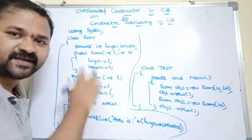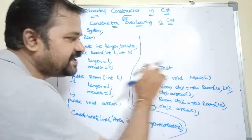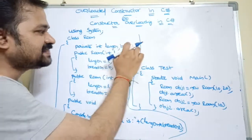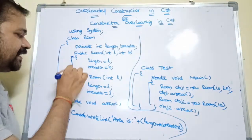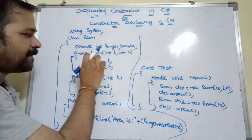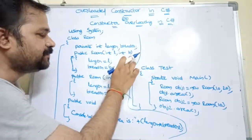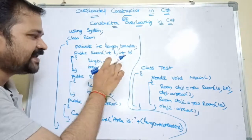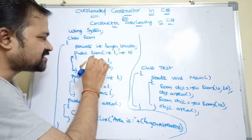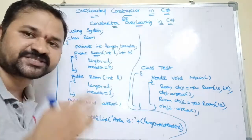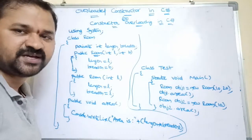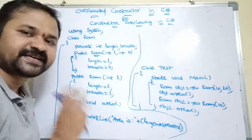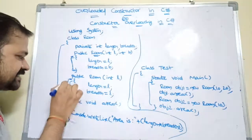Here we have two classes. The first class is RoomVariance and the second class is Test. We have two instance variables: length and breadth. Here we have a constructor: public Room(int l, int b). Next we are performing initializations — length equals l, breadth equals b. So this first constructor contains two integer arguments. If we pass two integer arguments while creating an object, then this constructor will be called.